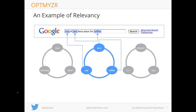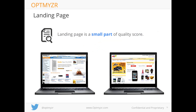Here's an example of relevancy: three advertisers are all buying the keyword 'Java' — one in the context of travel to the island of Java, one for Java coffee, and one for Java programming. If a user searches 'cup of Java best place for coffee,' Google uses signals from that specific search to determine that the coffee advertiser is really the only one that makes sense. This helps Google show more relevant ads that users like better.